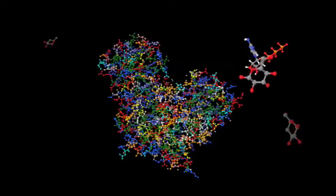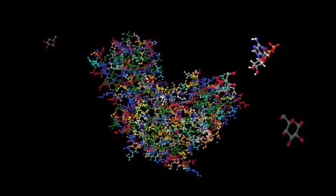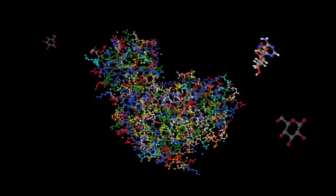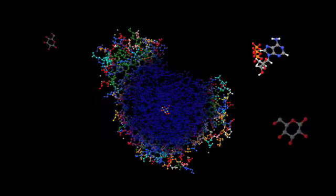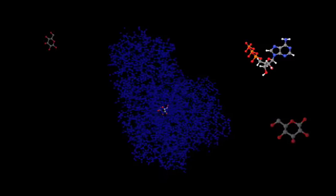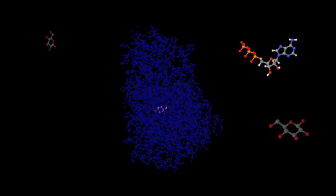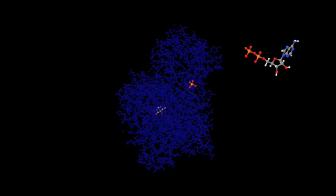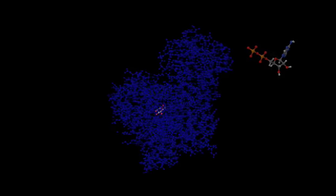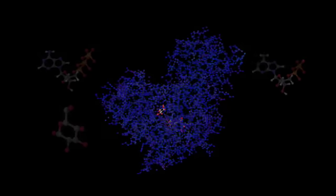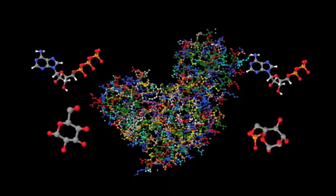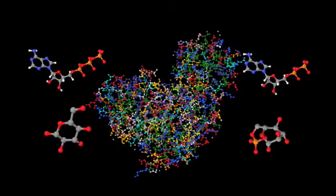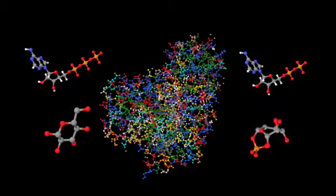Hexokinase captures a glucose molecule in its active site and holds it in just the right orientation like a robot arm might do in an automobile assembly line. It then takes the last phosphate group from an ATP molecule and attaches it to the glucose. Glucose and ATP go in, and glucose 6-phosphate and ADP come out.